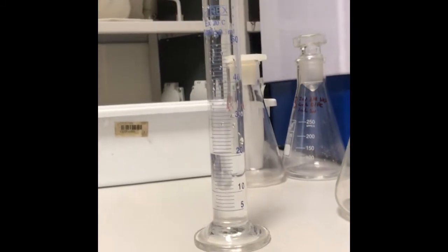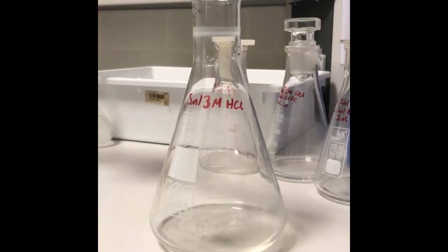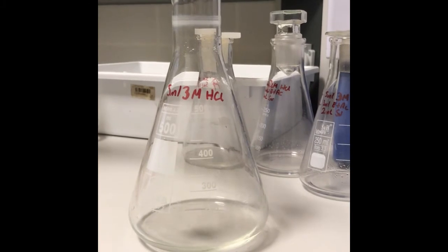Inside Erlenmeyer flask B: five milliliters of hydrochloric acid solution, four milliliters ethyl acid, and three milliliters distilled water.